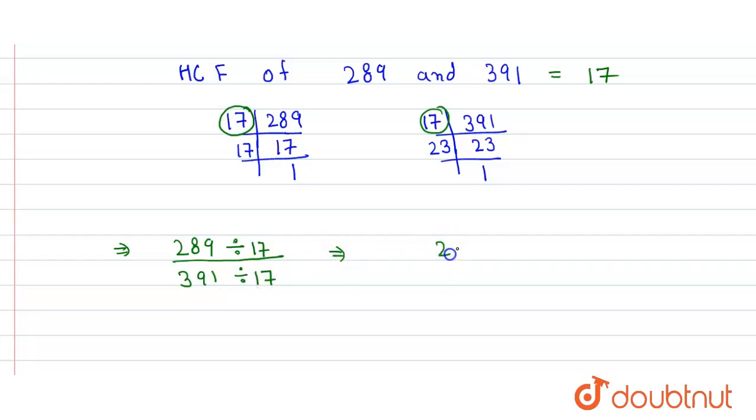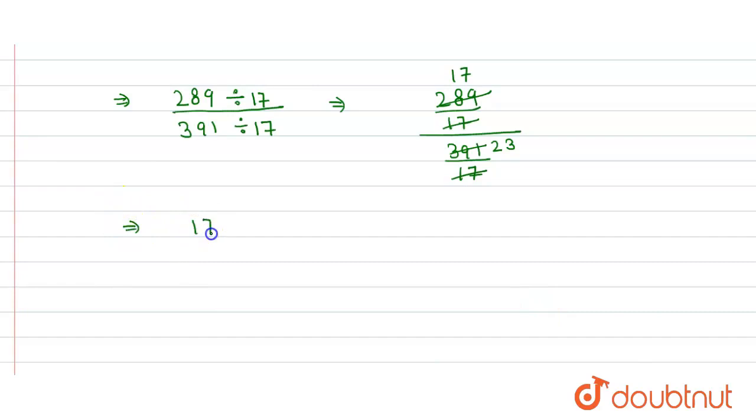This can be written as 289 divided by 17, over 391 divided by 17. When we calculate, we get 17 divided by 23 as the final answer.